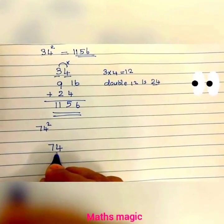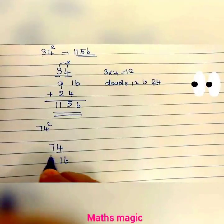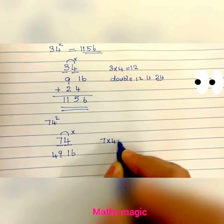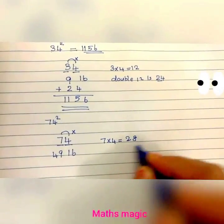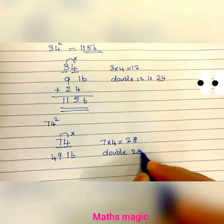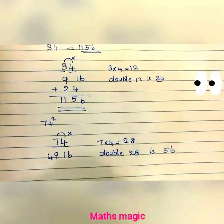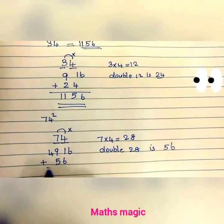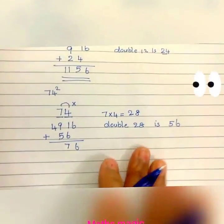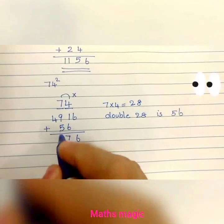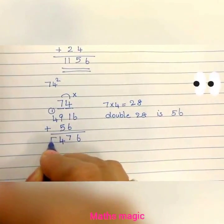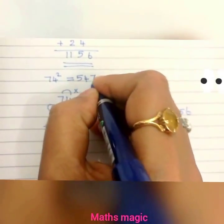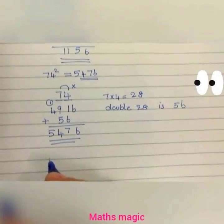Let us take another example: 74 squared. Take the square of 4, it is 16. Take the square of 7, it is 49. Now multiply 7 and 4: 7 times 4 is 28. Double 28 is 56. Add 56, leaving the first place. 6 plus 1 is 7, 9 plus 5 is 14, 1 here, 4 plus 1 is 5. So 74 squared is 5476.